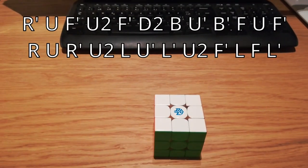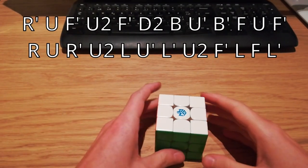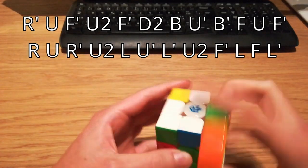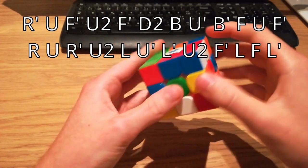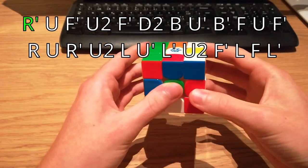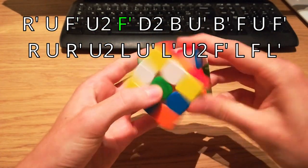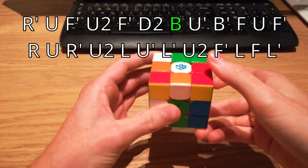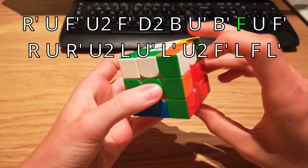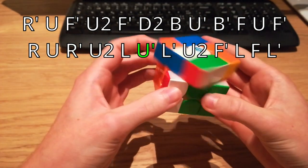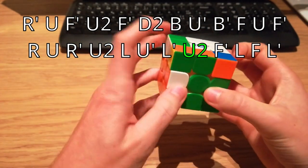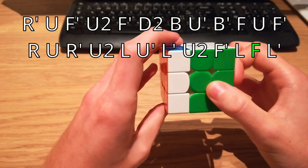So let's go through the scramble one more time and count our moves. 1, 2, 3, 4, 5, 6, 7, 8, 9, 10, 11, 12, 13, 14, 15, 16, 17, 18, 19, 20, 21, 22, 23, 24.